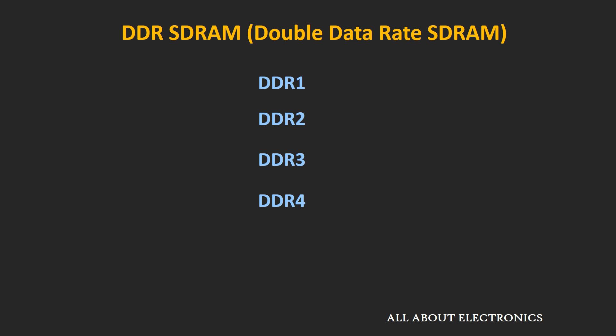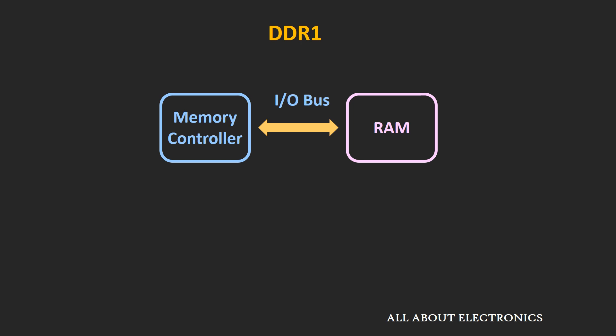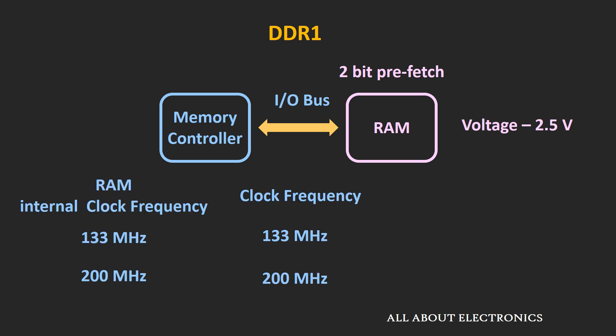There are different generations of DDR RAM from DDR1 up to DDR4, and nowadays the memories used inside desktops, laptops, and mobiles are either DDR3 or DDR4. In DDR1, the voltage is reduced from 3.3V to 2.5V. Data is transferred during both rising and falling edges, meaning 2 bits are prefetched in a single clock cycle — this is known as 2-bit prefetch.